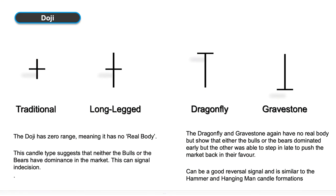The first candlestick formation we're going to look at is the doji. The doji is a small candle with a high and a low where the open and the close price are pretty much exactly the same. The second one is the long-legged doji, which is simply the same except the wicks are slightly longer. These are candlestick formations where we're showing indecision — we're not really sure where the market should go. The buyers and sellers have battled throughout the day but by the end of it the price is exactly the same.